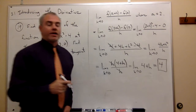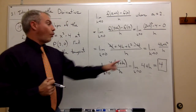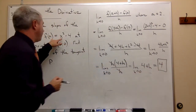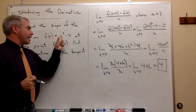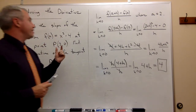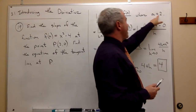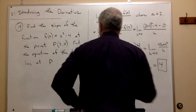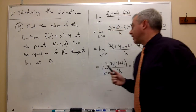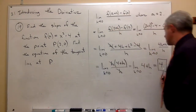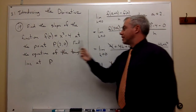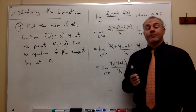Now, what is that number 4? 4 is the slope of this function, f(x) = x² - 4, at the point where a = 2 — in other words, at the point (2, 0). So what we found is the slope at the point (2, 0). That's half of the problem.